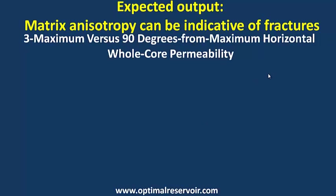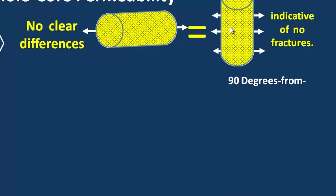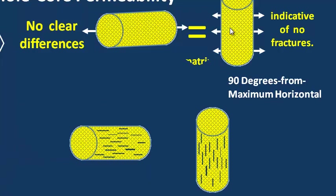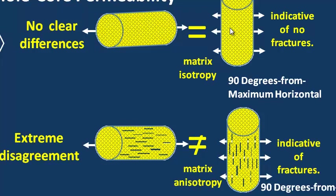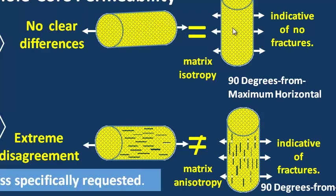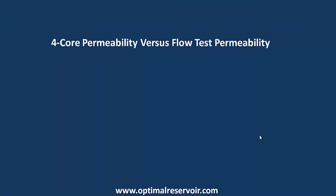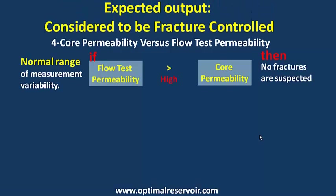The third technique is maximum versus 90 degrees from maximum horizontal whole core permeability. If the measurements for the two directions show no clear differences, that is an indication of no fractures. But if the measurements of the two directions show extreme disagreement, that is an indication of fractures. Usually we do not run this unless it is specifically requested.